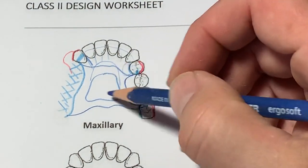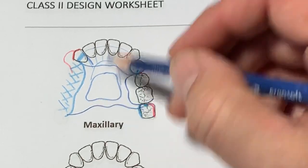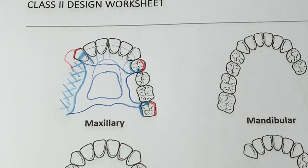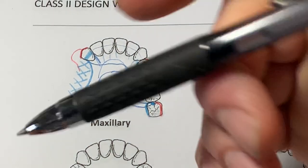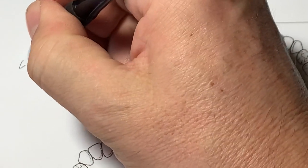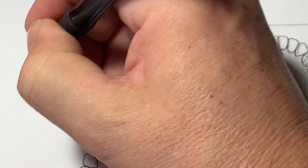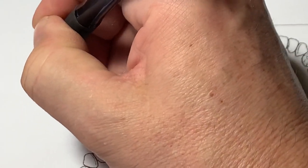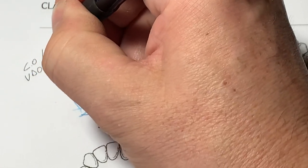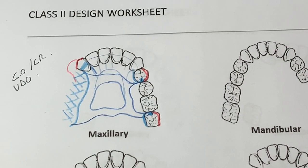Remember, all things are indicative of centric occlusion — how much bite we have and the vertical dimension of occlusion, or I should say CO or CR. We don't know if the opposing is a complete edentulous arch, as well as patient expectations.